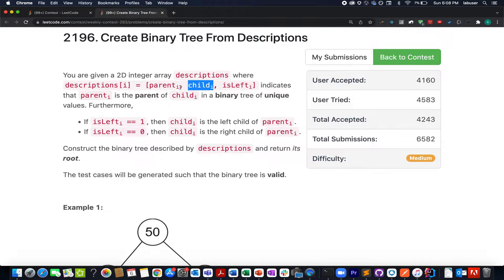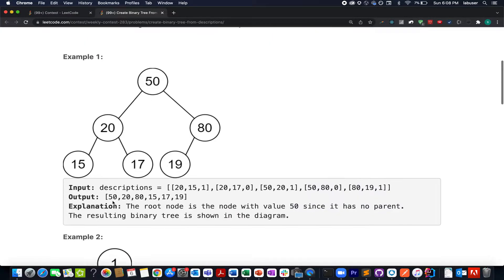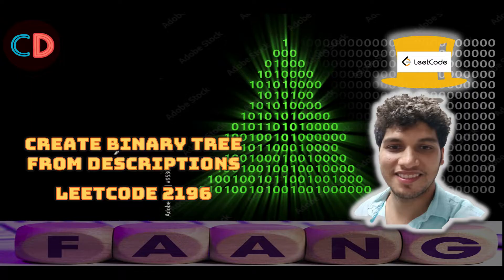What we need to do is construct the binary tree after walking through these description elements that we have. Also, in the end we finally need to return its root. Here they have provided us with an example. I'll be walking you through this example as well as the algorithm to go about it by the presentation.